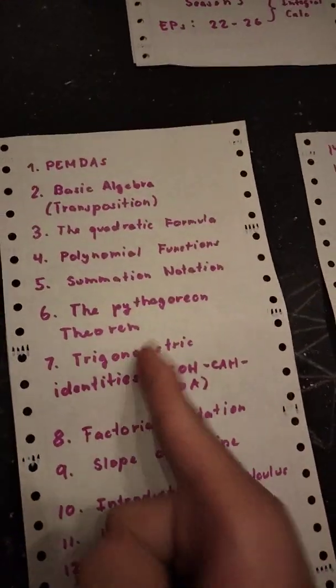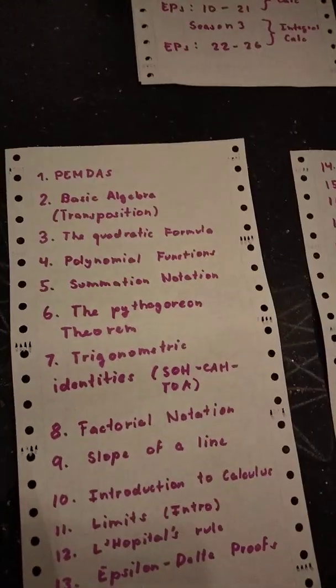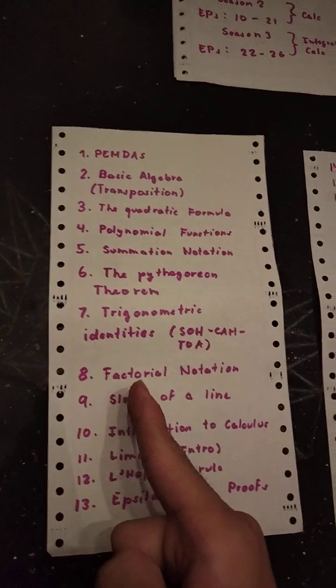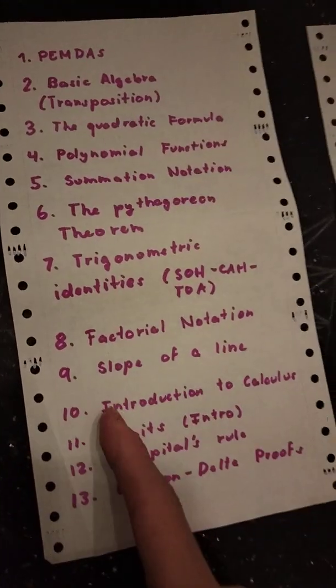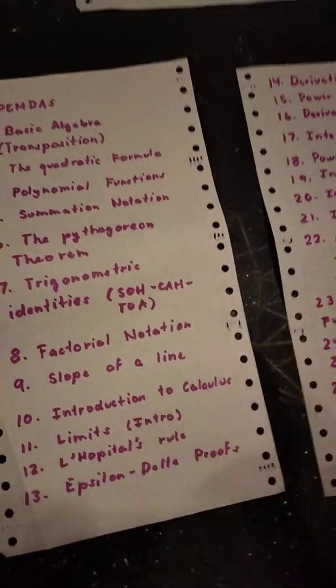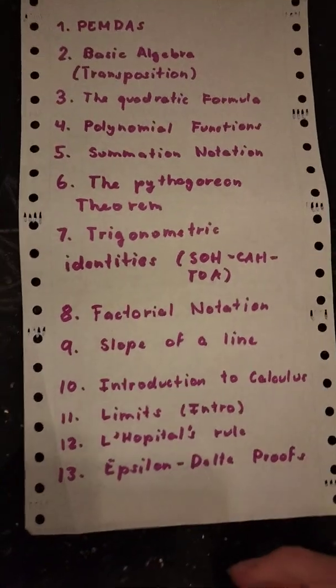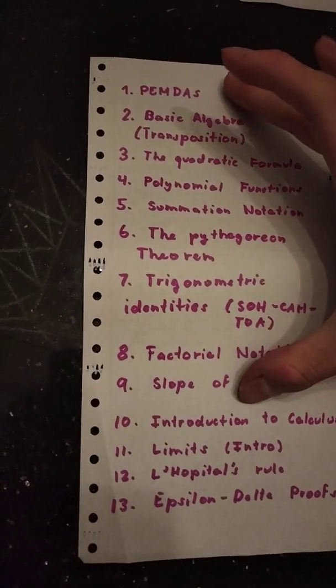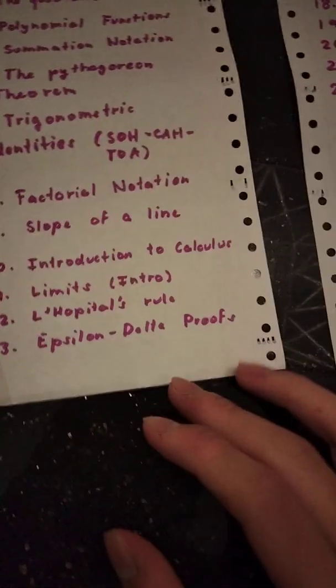Trig identities which involves sine, cosine and all that. Next we have factorial notation which I'll discuss, and the last one which is slope of a line, which is important when coming to understand derivatives and calculus itself. And that's all that's going to be in season one.